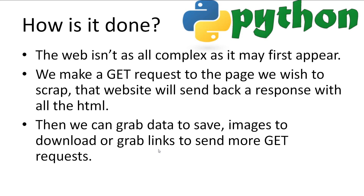How do we actually go about scraping? It's important to understand that websites are not as complex as they appear in our web browsers. They are in essence just text formatted in such a way that our web browsers know how to make them look pretty. When we go to a web page on the internet, our web browser makes a GET request to that server. We can also make GET requests to websites just like our browser in code, and the web server will sometimes gladly send back the HTML text file. Inside that HTML text file, we can start to grab data, image links to download, or grab more links to send GET requests to. We repeat this process until we have grabbed all the information we want.